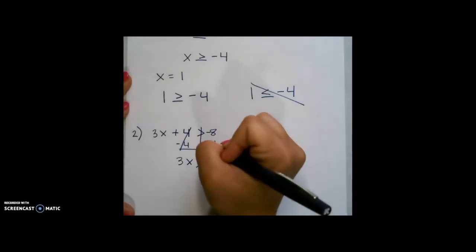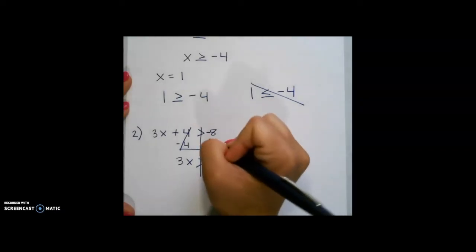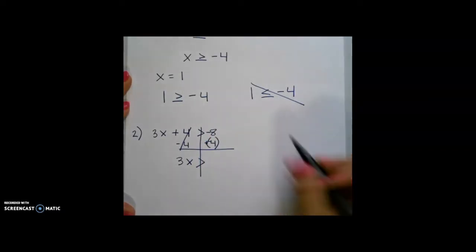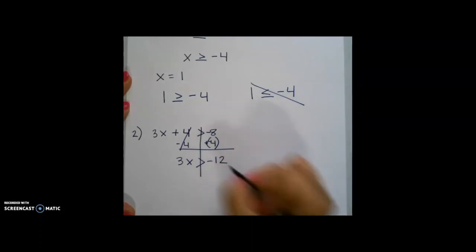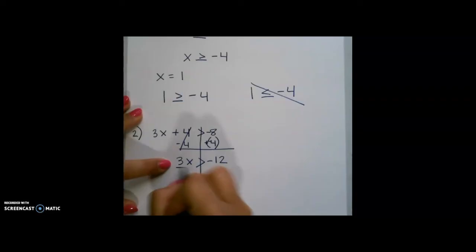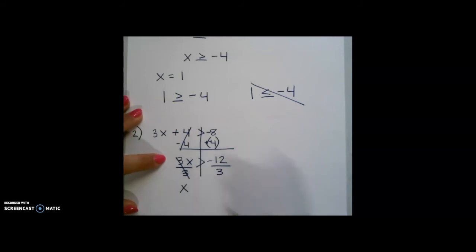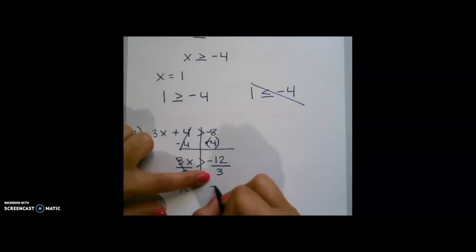Negative 8 minus 4 is the same thing as negative 8 plus negative 4, which gives us negative 12. Now, we want to do the inverse of multiplication, which is division. This is going to cancel out over here and leave us with x on this side, and negative 12 divided by 3 is negative 4.